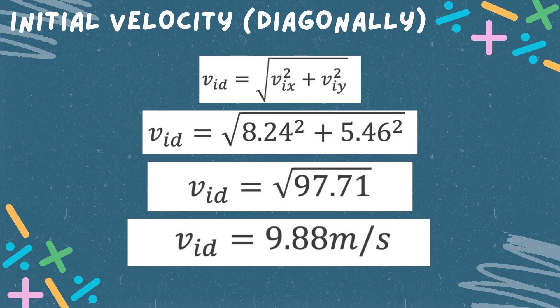Now we have to find the diagonal initial velocity using the formula: the diagonal initial velocity is equal to the square root of the horizontal initial velocity squared plus the vertical initial velocity squared. Let us now substitute the given. After substituting, we can now solve for the diagonal initial velocity. After solving, we finally get the diagonal initial velocity: 9.88 meters per second.